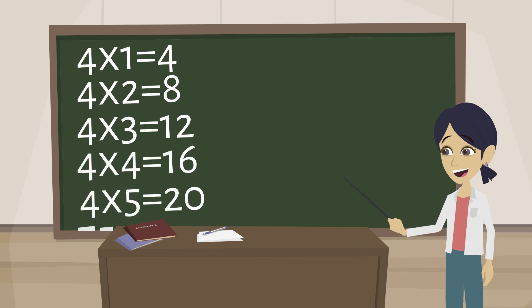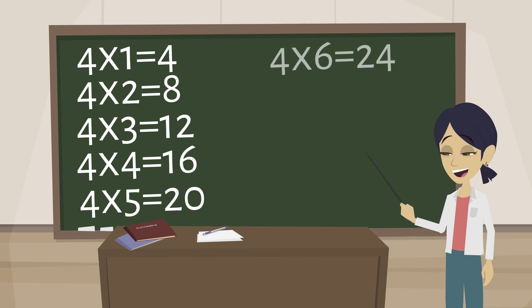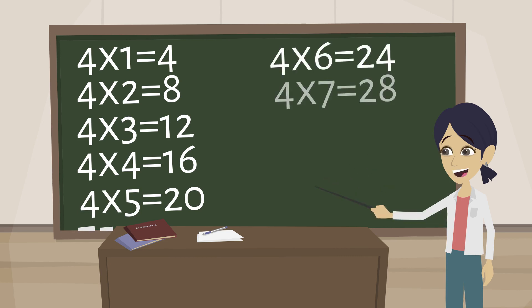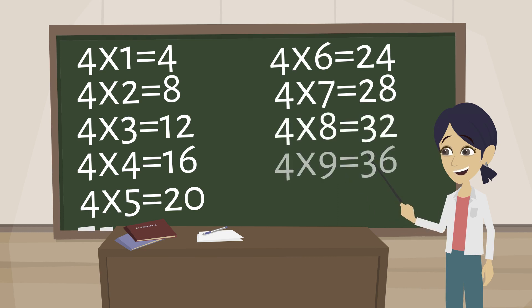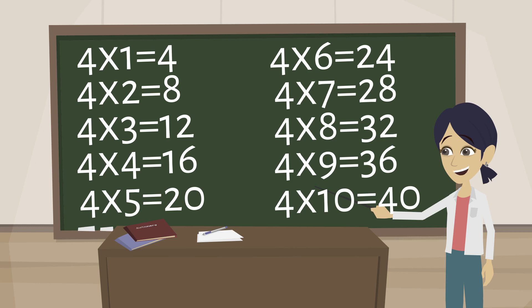4 5s are 20, 4 6s are 24, 4 7s are 28, 4 8s are 32, 4 9s are 36, 4 10s are 40.